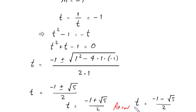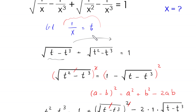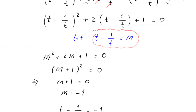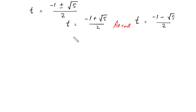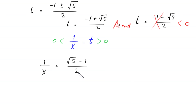Now recall that we supposed 1/x equals t. Since 1/x is positive, t must be greater than 0. The value t equals (negative 1 minus root 5) over 2 is less than 0, so it is rejected. We accept only t equals (negative 1 plus root 5) over 2, which equals (root 5 minus 1) over 2.